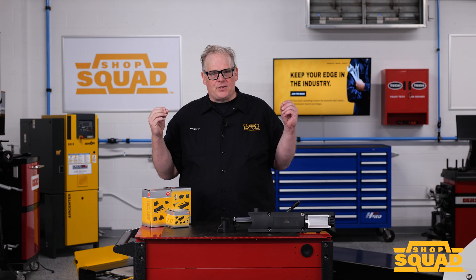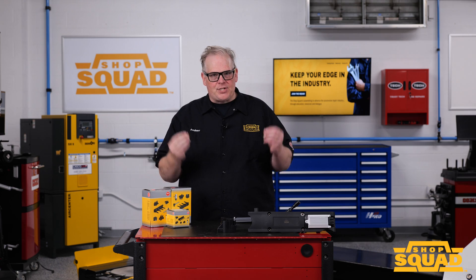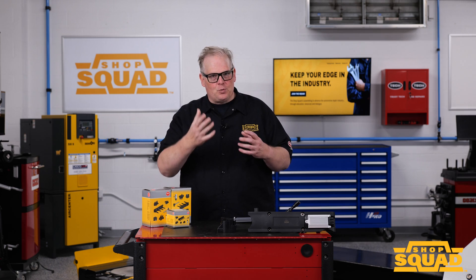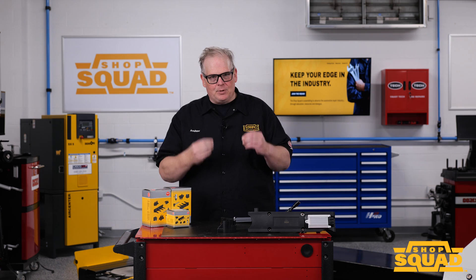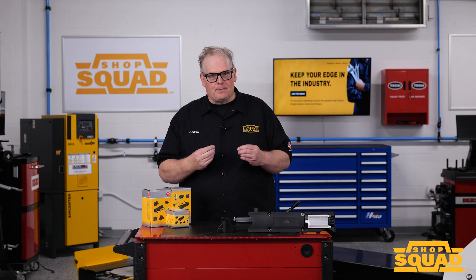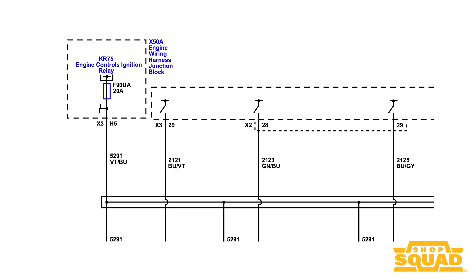A transistor is a solid-state switch with no moving parts and it's able to rapidly turn power on and off in a given circuit. In the case of this ignition system, it's turning on the primary side of the coil. This is a great starting point to see if an ignition coil has power and control for that coil.